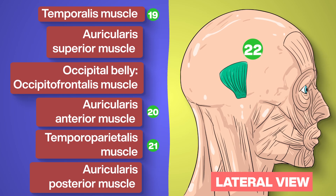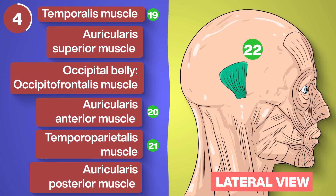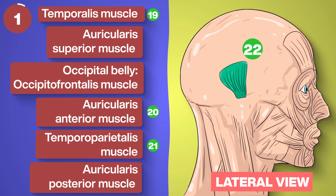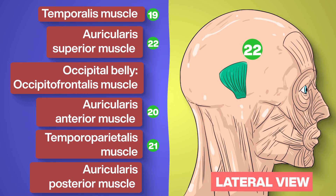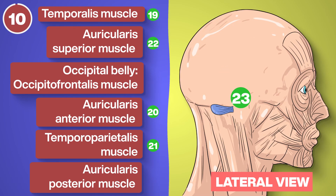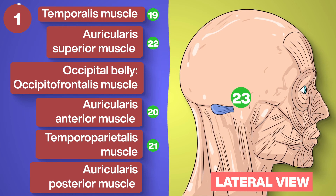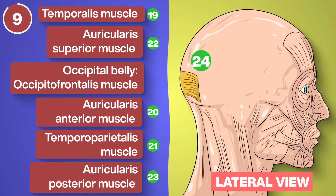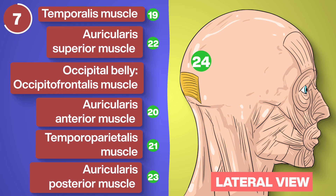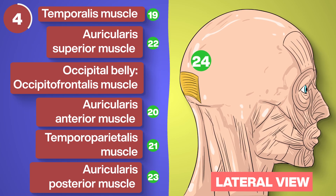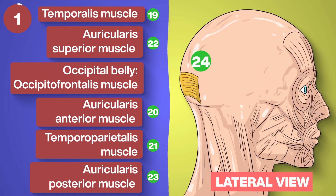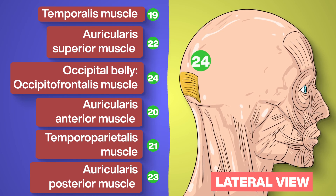Number 22: Auricularis superior muscle. Number 23: Auricularis posterior muscle. And number 24: Occipital belly of the occipitofrontalis muscle.